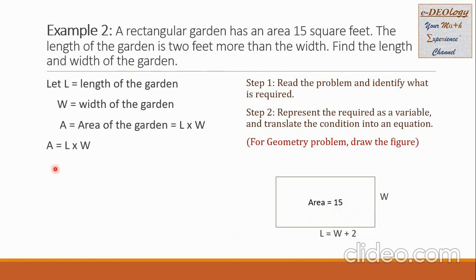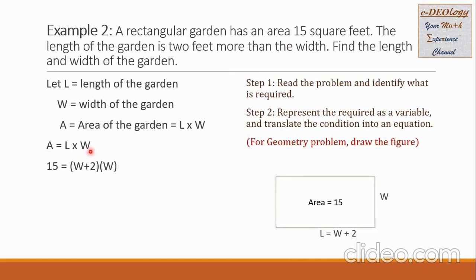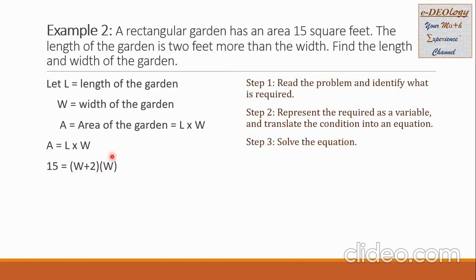We use the formula A equals L times W. Substituting the values: A is 15, and L is W plus 2, so we get 15 equals W plus 2 times W. In Step 3, we solve the equation by multiplying W through the binomial W plus 2.